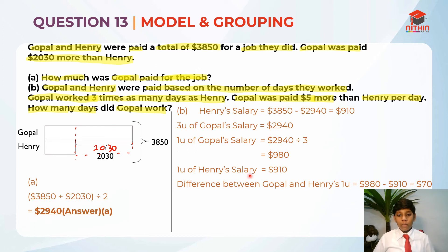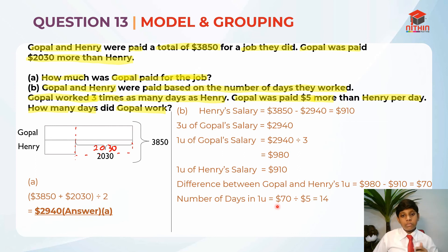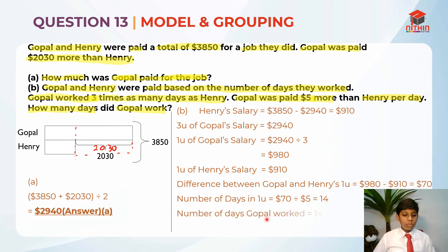Now I apply the grouping concept. They're asking how many days did Gopal work. The number of days in one unit is $70 ÷ $5 = 14, because Gopal was paid $5 more than Henry per day, so $5 is the small difference and $70 is the big difference. The number of days Gopal worked is 14 × 3 = 42, because Gopal worked 3 times as many days as Henry. The answer is 42.